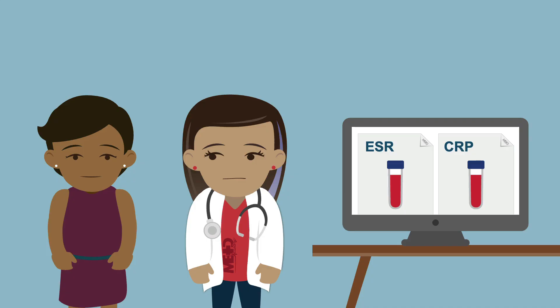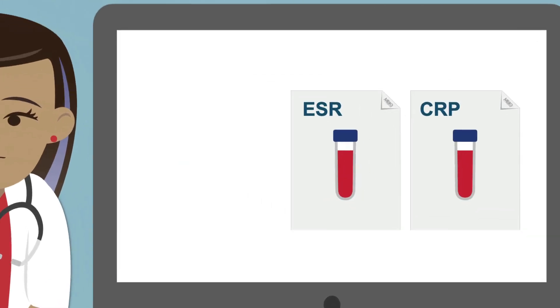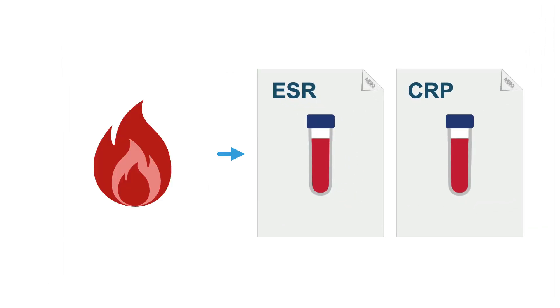Erythrocyte sedimentation rate and C-reactive protein are checked when you suspect any inflammatory or autoimmune condition. However, they are not perfect tests because they could be normal even in a patient with inflammatory arthritis. They are also non-specific tests, meaning that any kind of inflammatory process can elevate them.